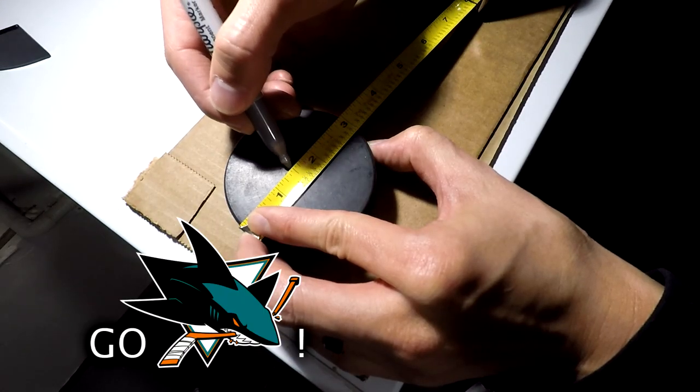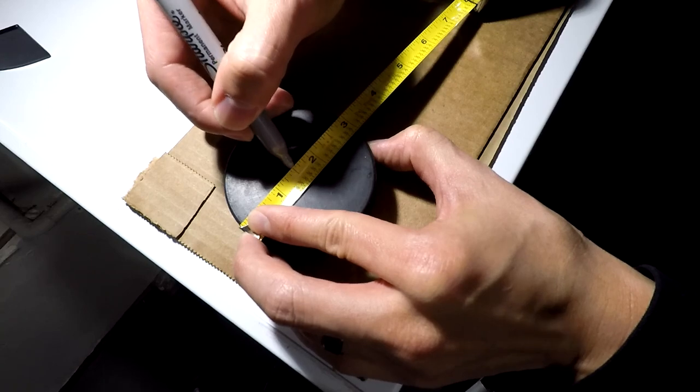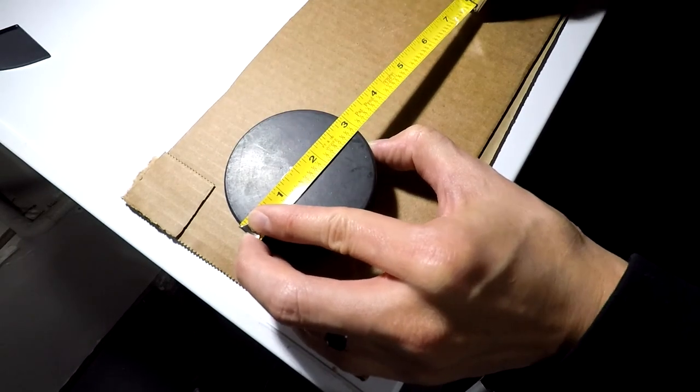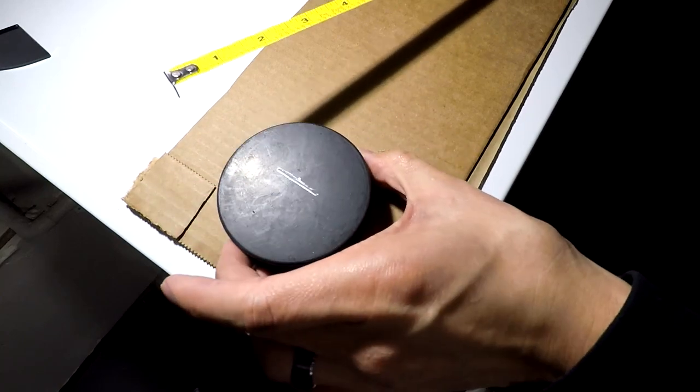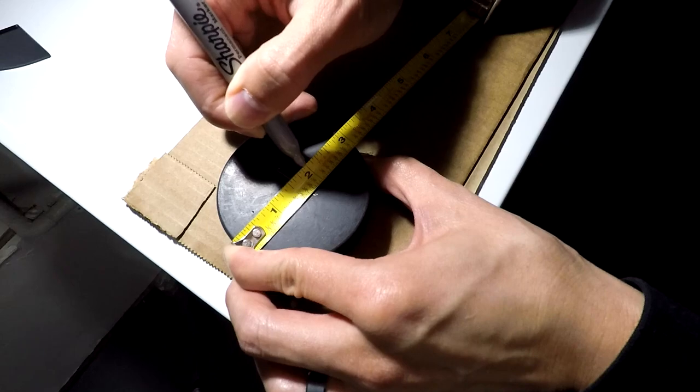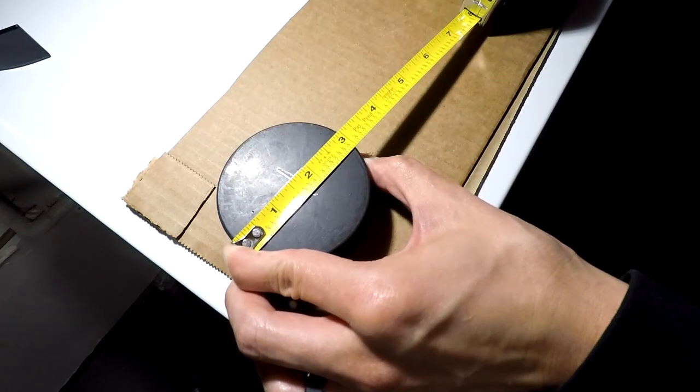Then what you want to do is a standard NHL hockey puck is three inches in diameter. So if you measure to an inch and a half, and then go half an inch each way, then you're going to find your center. Go ahead and do that on both sides, so you have a cross or a plus, and then you can put the rubber stopper right on top of that. It's a nice little target.